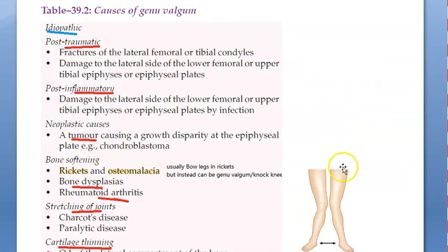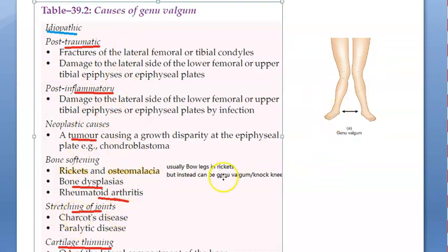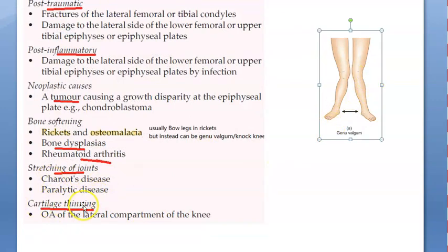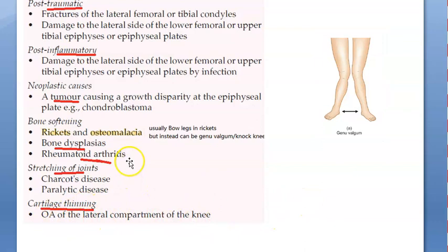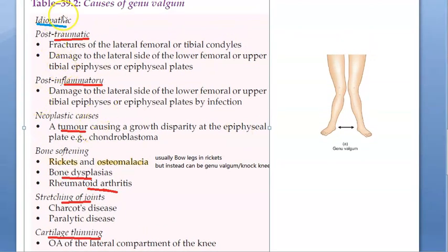What are the causes of genu valgum? Mostly idiopathic. Otherwise there can be trauma, some inflammation, some tumor — a neoplastic condition — bone dysplasia, rheumatoid arthritis, stretching of the joint like in Charcot's disease or paralytic disease, or cartilage can be thin — like osteoarthritis of the lateral compartment of the knee. So the causes you will write: idiopathic, post-traumatic, neoplasm, inflammatory, bone dysplasia, rheumatoid arthritis, osteoarthritis, stretching of joint, etc.